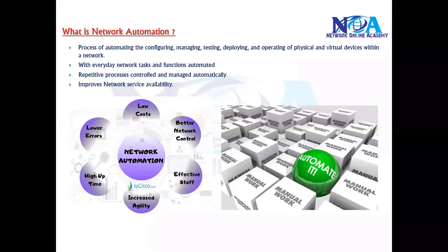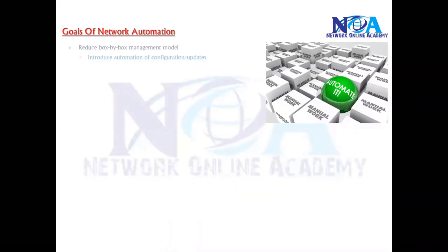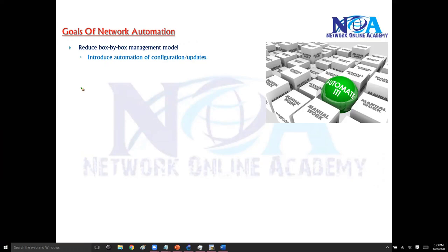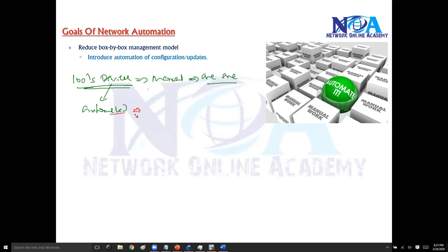The first thing network automation does is reduce box-by-box management, where previously you had to go to each and every device, log in to the command line, and copy-paste or type configurations. With hundreds or thousands of devices, you no longer need to go and configure manually one after the other — that process is time-consuming and can be automated by software running in the back end.